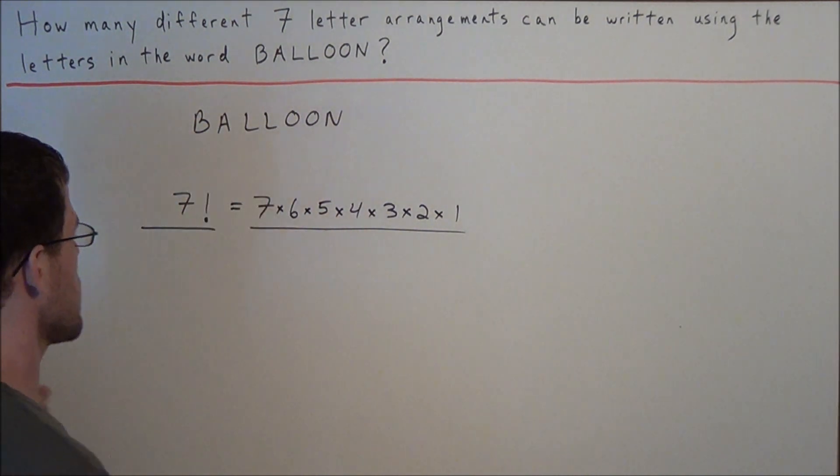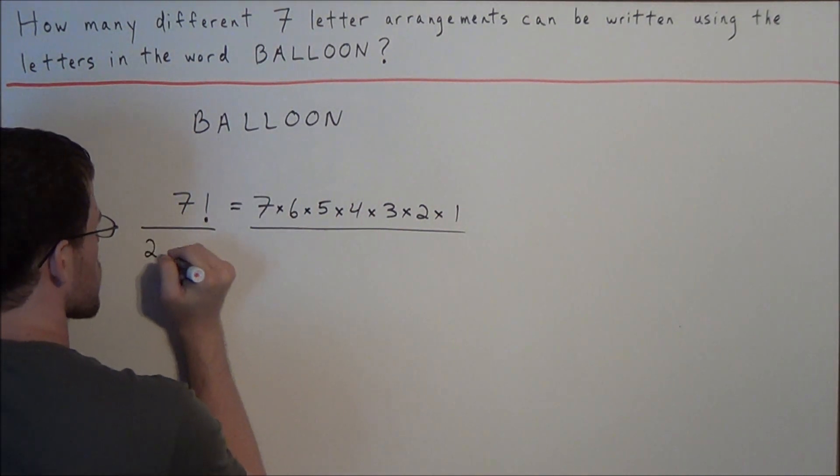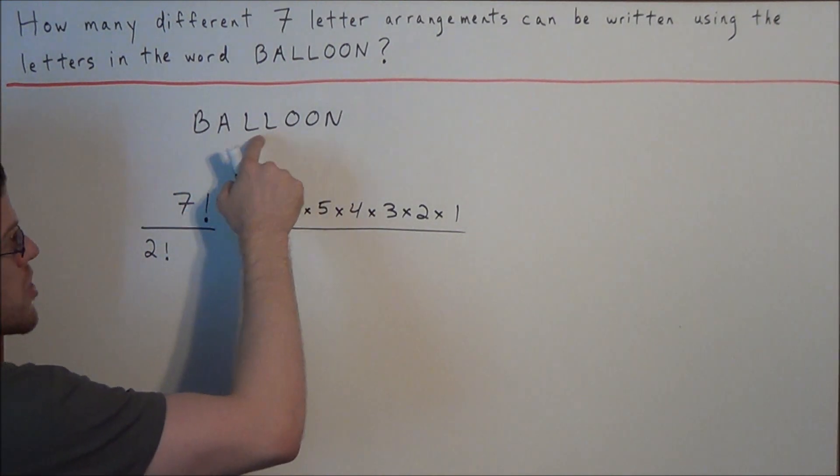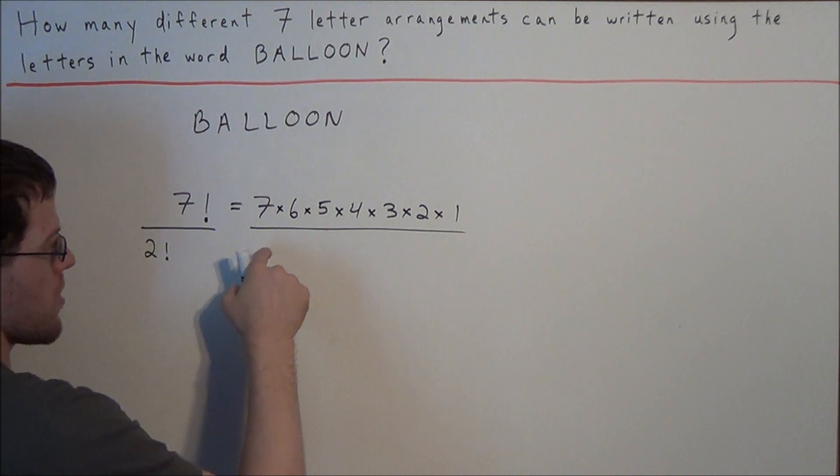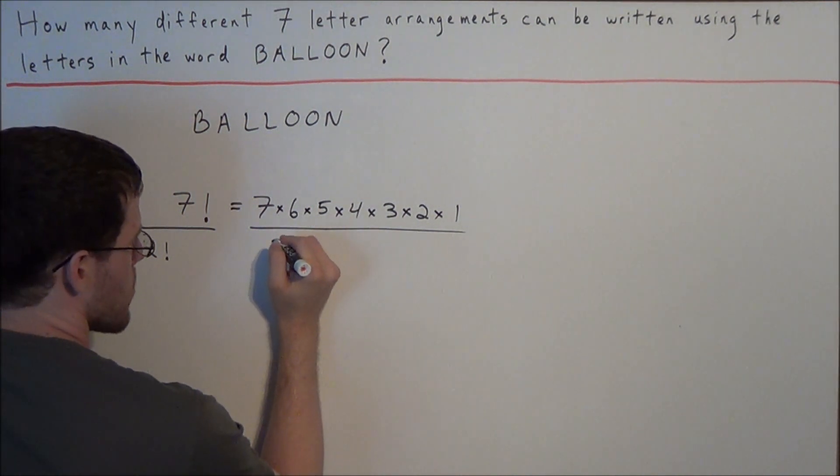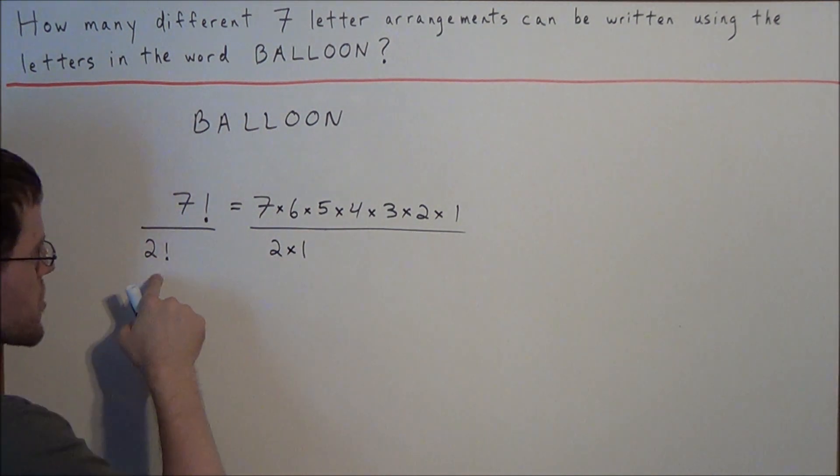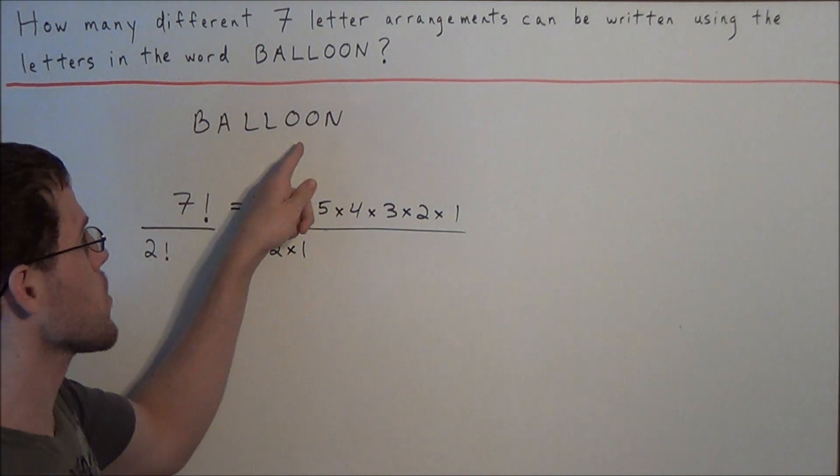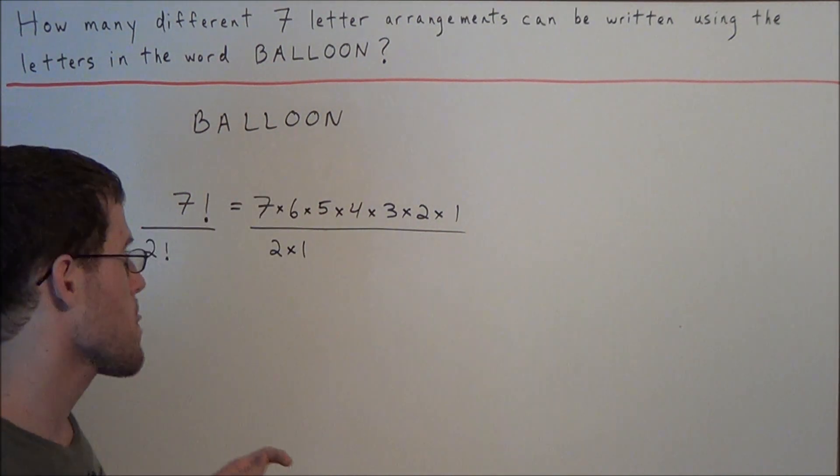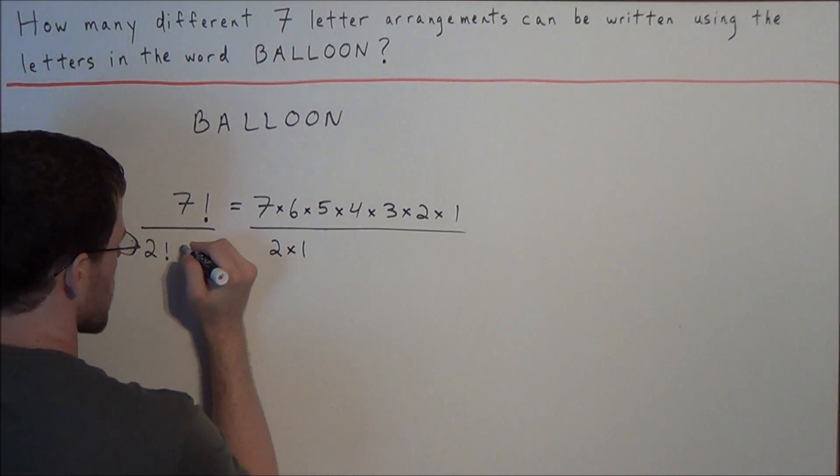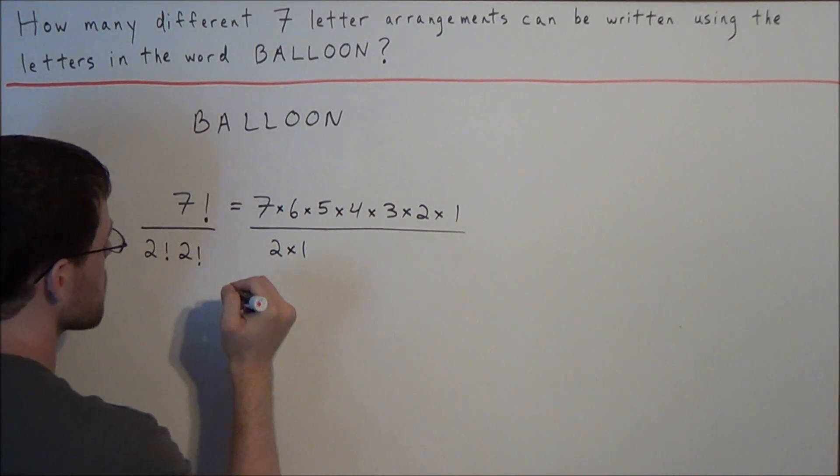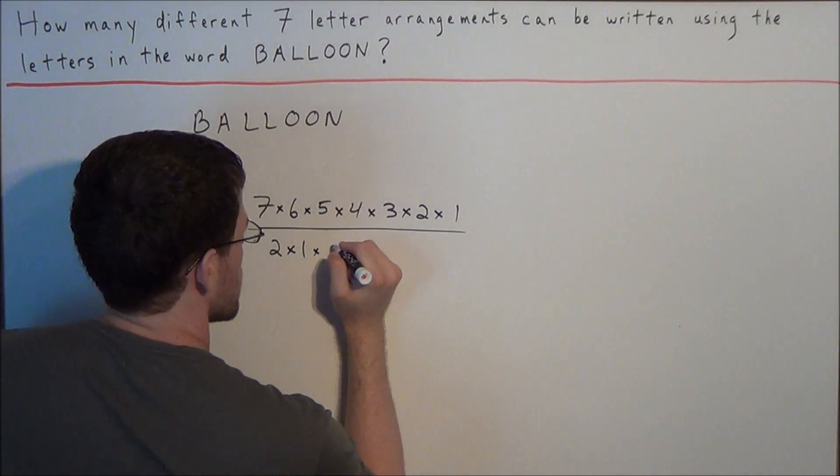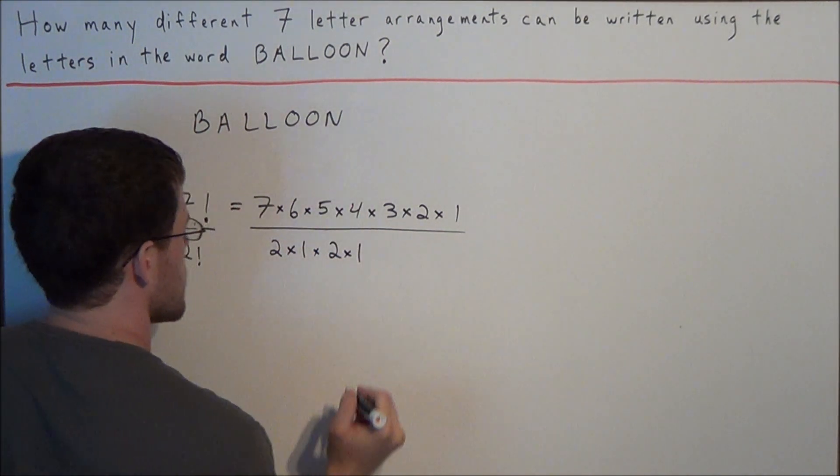Well since there are two L's, we have to divide by two factorial because there are two factorial ways to arrange two L's. So we're going to write 2 × 1 because that is the definition of two factorial. And now to account for the two repeating O's, we need to divide by two factorial again because there are two factorial ways to arrange two O's. So we have another 2 × 1.